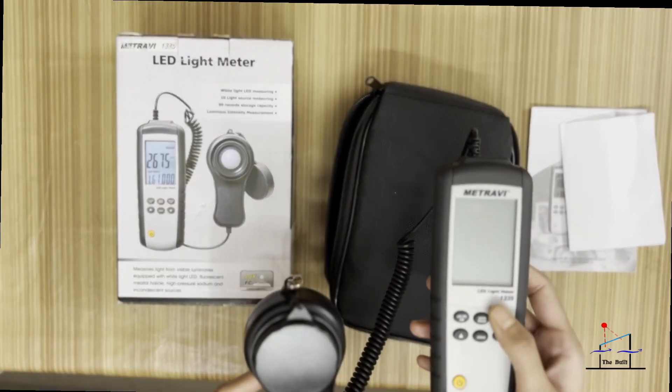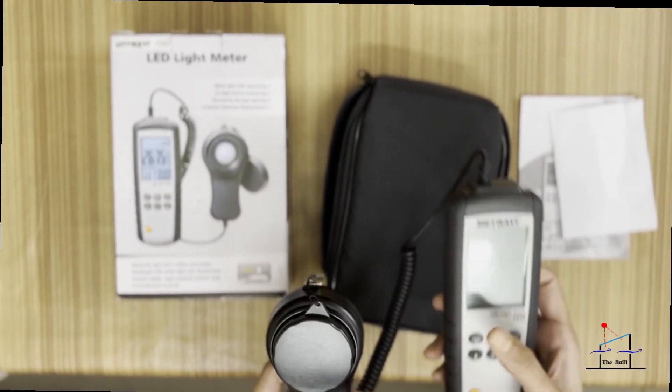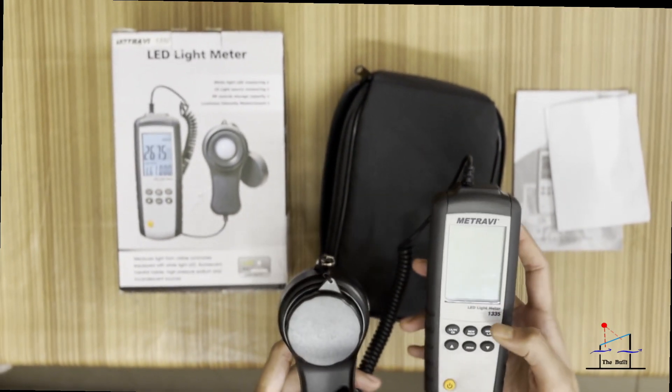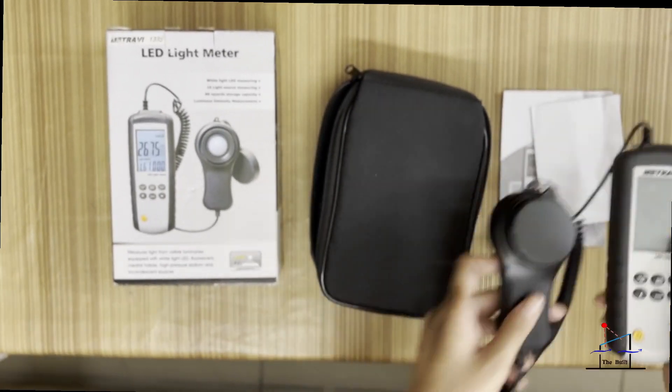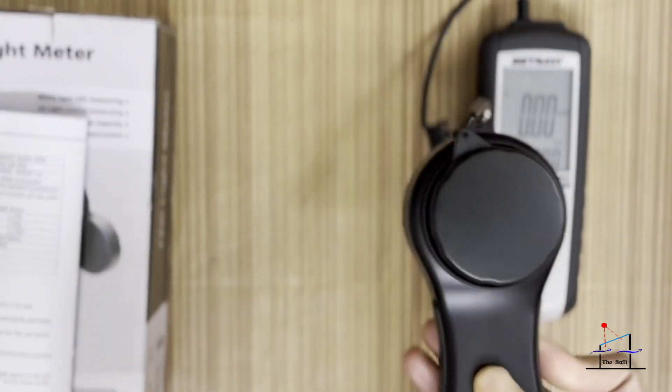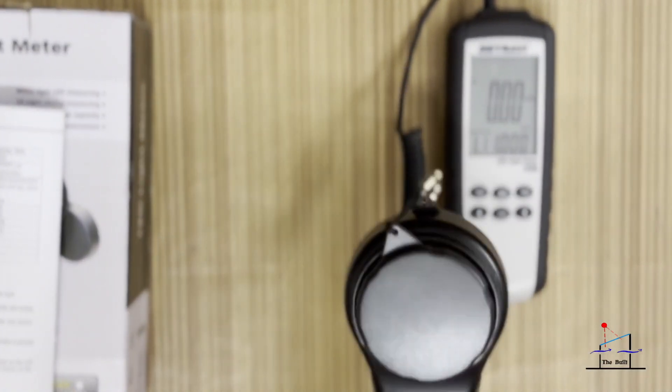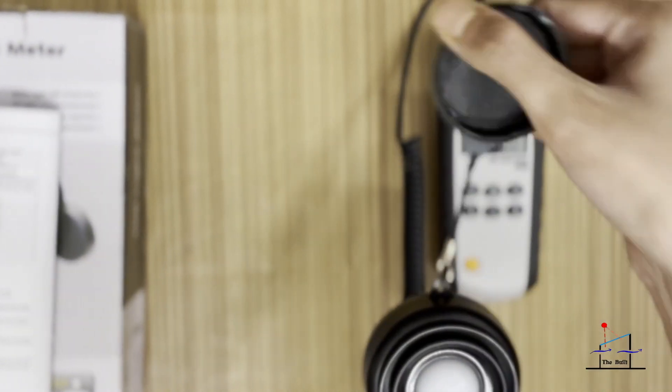This is the main device that is going to be used for calculation, and this is the screen on which the measurements will be displayed. This is the photo sensor which will measure the lux values. This is the cap which is placed on the photo sensor.